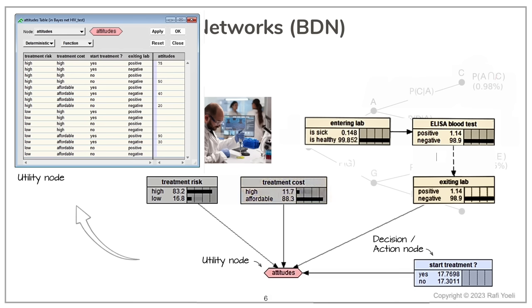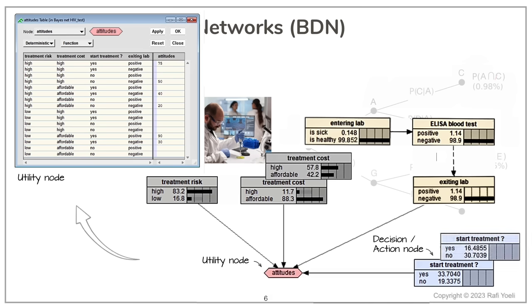After moving the bars on both nodes, you can see on the decision node that the previous nearly identical recommendation of 17% for both yes and no, has now shifted in favor of getting the treatment. But if we now move the upper bar on the cost node to increase the cost of the treatment, at some point that reverses the decision from yes to no.